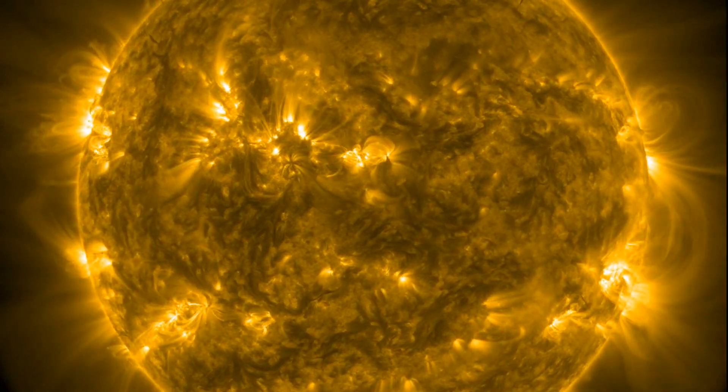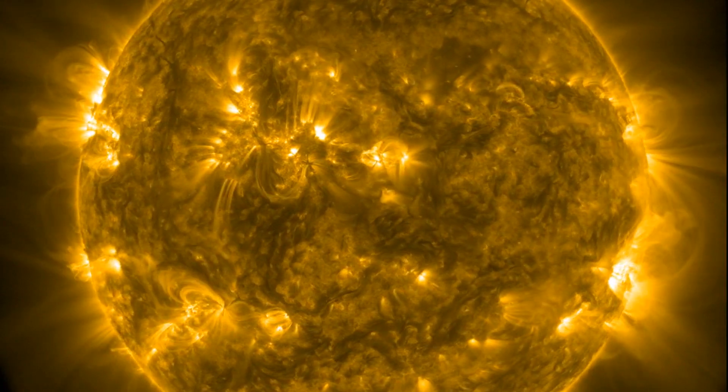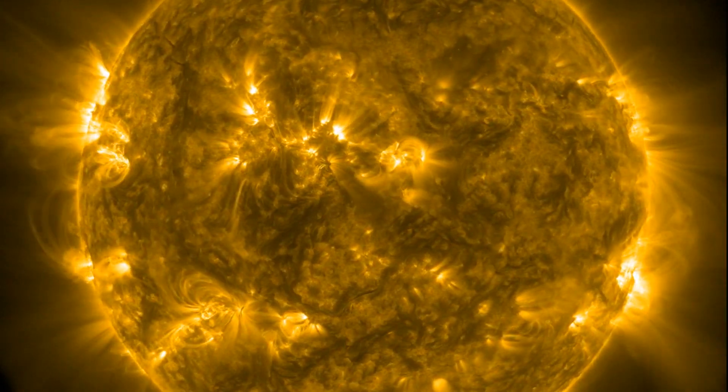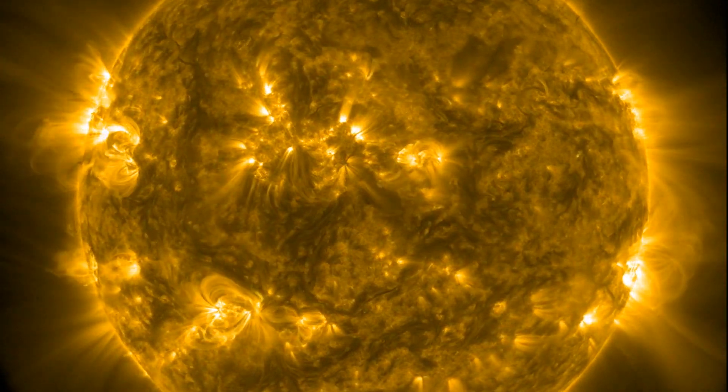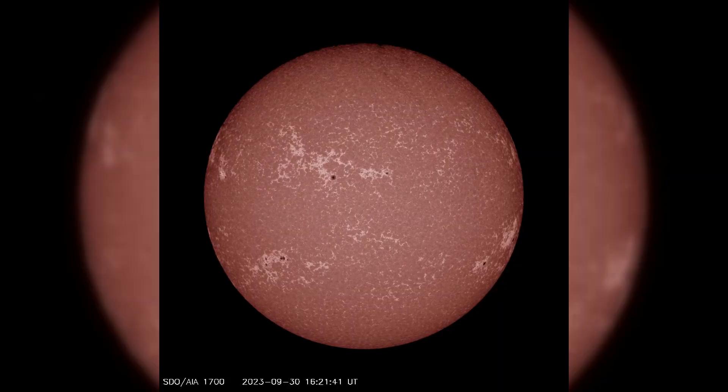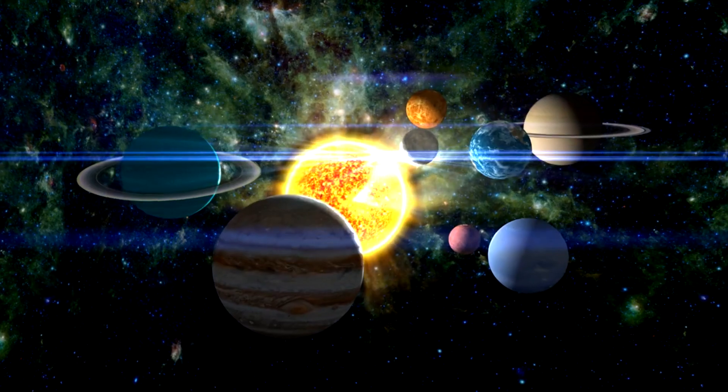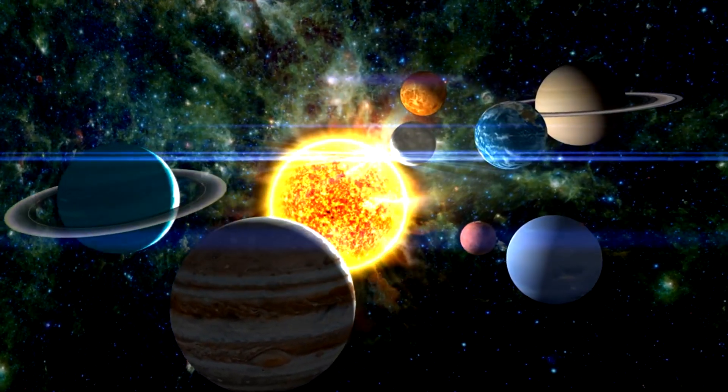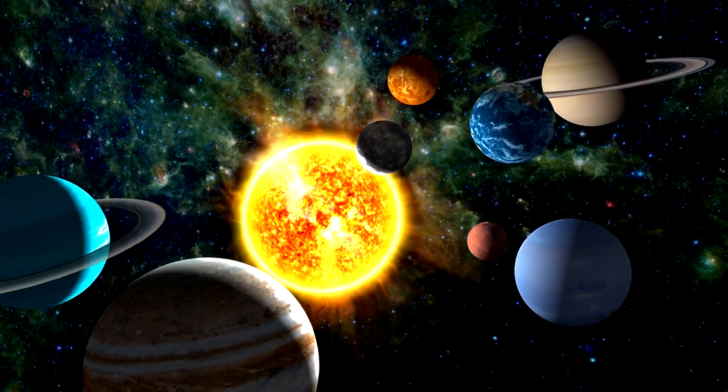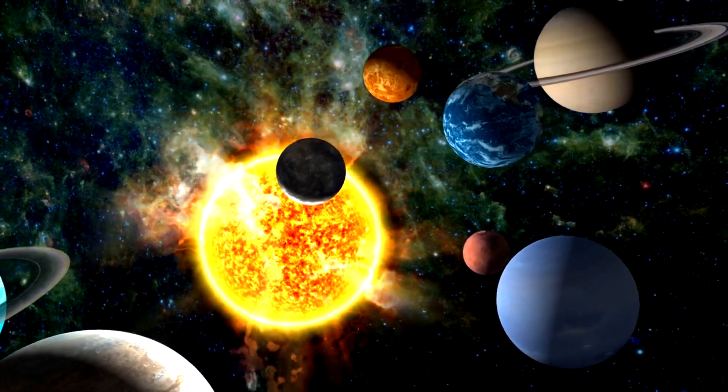Regions 3451 and 3450 also had some minor developments, keeping things interesting. Sunspot numbers continue to tell the tale of solar activity. Looking ahead, solar activity is expected to remain at low levels with a chance for M-class flares until October 3.